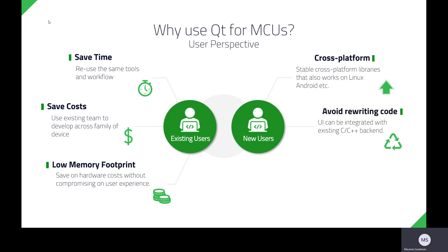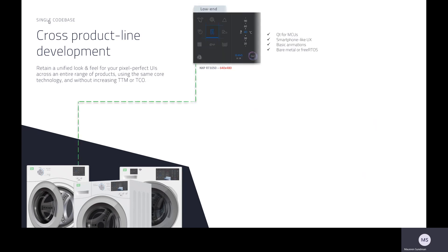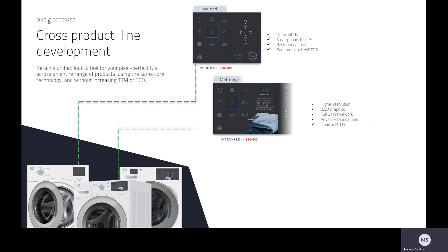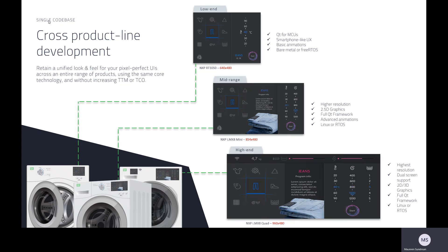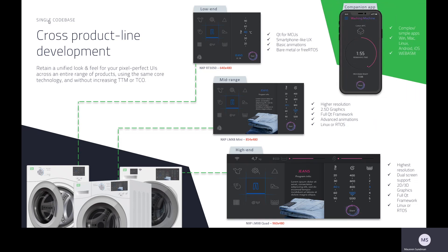A key part of the Qt value proposition is our ability to offer our customers a true cross-platform development toolkit. Customers are able to save more time and money by using Qt for MCUs — it increases their options relative to target hardware, allows them to continue using the familiar Qt framework and workflows they are accustomed to, and it avoids code rewrites. Qt for MCUs extends the Qt framework by enabling a completely unified technology approach for an entire range of products, allowing customers to create a consistent and branded user experience without increasing costs or risking delays to market.